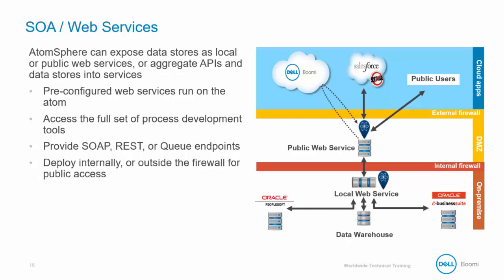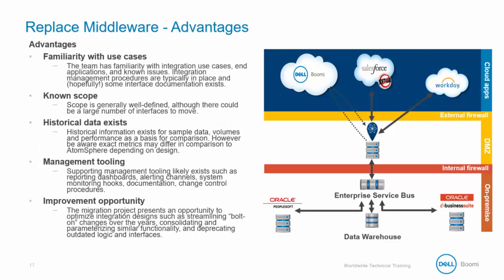AtomSphere can expose data stores as local or public web services, or aggregate APIs and data stores into services. You can use AtomSphere to provide SOAP or REST endpoints for web services, either internally or externally. The last implementation scenario is replacing existing middleware.